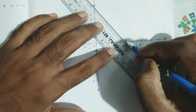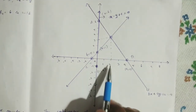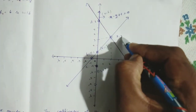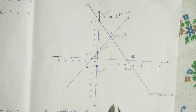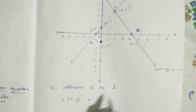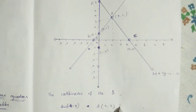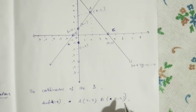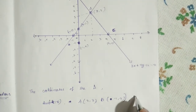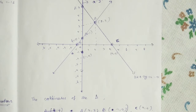The two lines intersect at a common point, which is (2, 3). So the vertices of the triangle are: A at (2, 3), B at (-1, 0), and C at (4, 0). These are the three coordinates of the vertices of the triangle formed by the two lines and the x-axis.